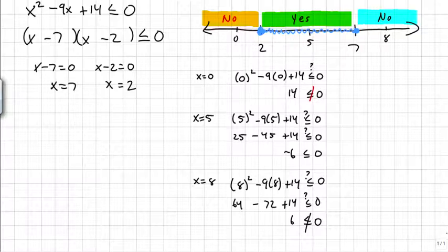If I wanted to write this with an interval, my interval goes from 2 to 7, and I use brackets to indicate that it's a less than or equal to part. Also I could write this as an inequality. I could do 2 is less than or equal to x, which is less than or equal to 7. So there's our first example.